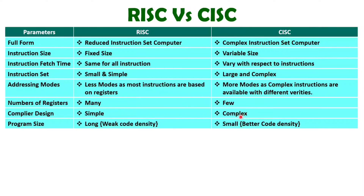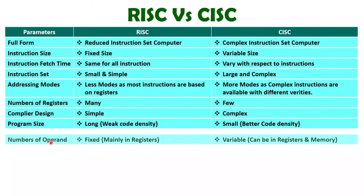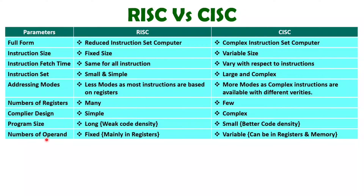But remember, code density is better with CISC, but execution speed will be fast with RISC architecture. When you talk about number of operands, then number of operands are fixed with RISC architecture. Majority of times you will be observing that operands are in registers only. But with CISC architecture, the number of operands will vary with respect to instructions — it can be there with registers, it can be there with memory, as you are having complex instructions with CISC architecture.